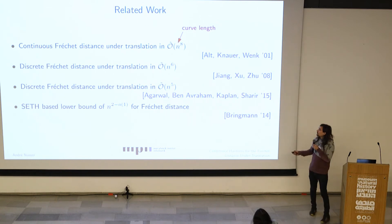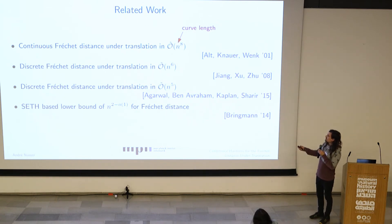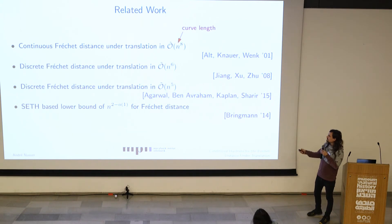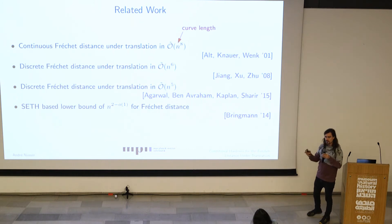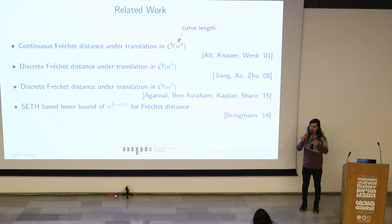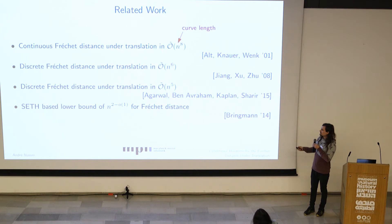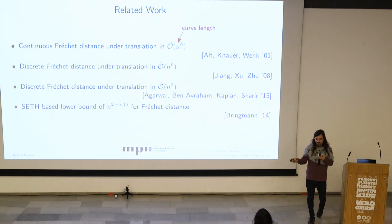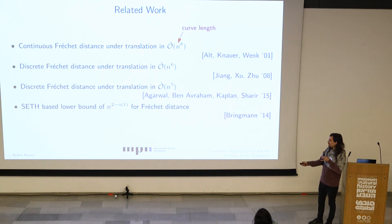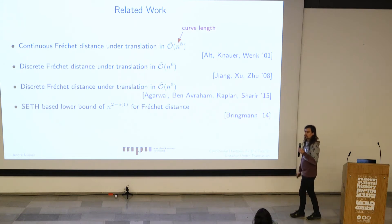There is a lot of related work. For the continuous Fréchet distance under translation there was an O(n^8) algorithm, where n is the curve length — the number of nodes of the polygonal chain. For the discrete Fréchet distance under translation we have O(n^6) and O(n^5), so it got improved to O(n^5). All those algorithms actually build the arrangement of the problem, partitioning the plane into parts where all translations in those parts are equivalent. That arrangement size is n^4, which will match our lower bound. There is also a conditional lower bound by Carl which is quadratic and carries over.